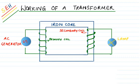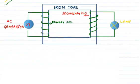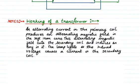The notes for the working of a transformer are as follows: An alternating current in the primary coil produces an alternating magnetic field in the soft iron core. This alternating magnetic field cuts the secondary coil and induces an EMF in it. The lamp lights as the induced voltage causes a current in the secondary coil. You can pause the video and take down these notes.